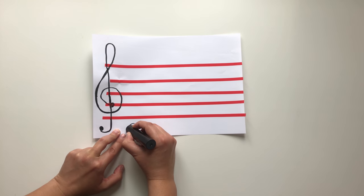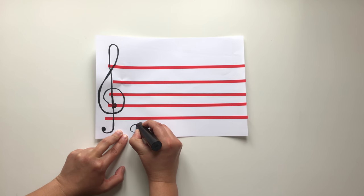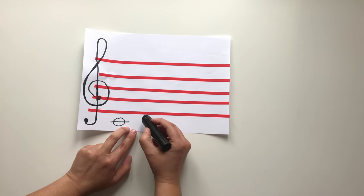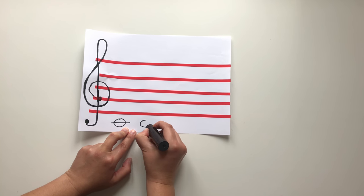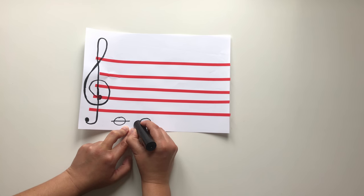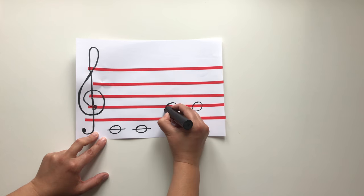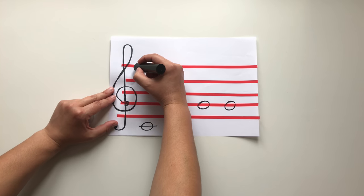Then we start drawing notes. The first note of the Twinkle Twinkle Little Star song is middle C. We draw middle C below the first stave line. C, C, and the next two notes are going to be G, G.